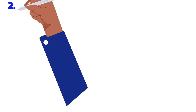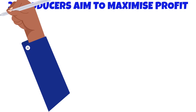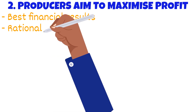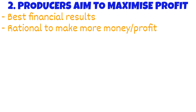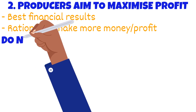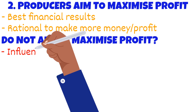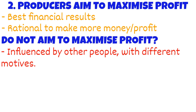The second economic assumption is that businesses aim to maximize profit. Businesses will always choose an option that gives them the best financial results. It is rational for the business owner to make decisions that bring in more money. Economists assume all businesses aim to maximize profit. But there are some times a business does not aim to maximize profit. Here are three reasons why. The performance of some businesses may be influenced by the behavior of other people in the organization rather than the owner. Business owners may delegate decision making to others who may have different objectives to those of the owners.